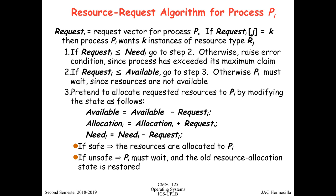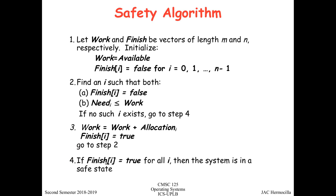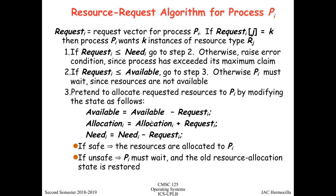This simulation checks whether the resulting state is safe or unsafe. If the system remains in a safe state after running the safety algorithm, the request is granted. If the simulated allocation results in an unsafe state, process Pi must wait and the resource allocation state is restored — the allocation is rolled back.